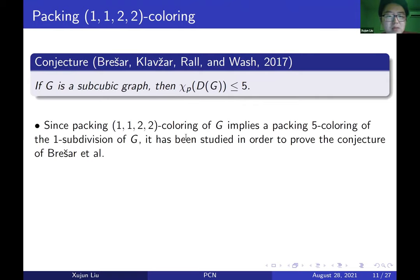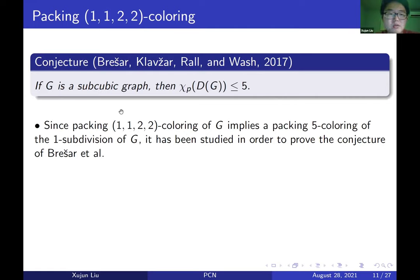The 1-1-2-2 coloring is special because, by the proposition of Gastineau and Togni, a 1-1-2-2 coloring implies a 1-3-3-5-5 coloring of DG, which implies a packing 5-coloring of the one-subdivision of G. So it can be used to prove the conjecture.